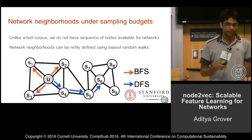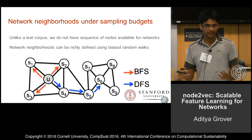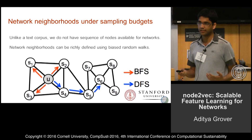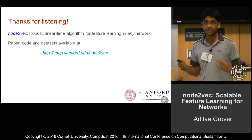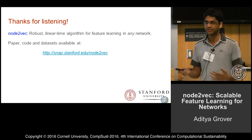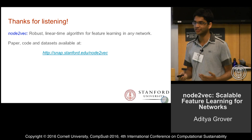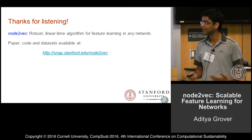In real-world networks, we want to interpolate between these two paradigms. node2vec provides a robust linear time algorithm for interpolating between these different sampling paradigms to generate feature representations that are very effective in practice.